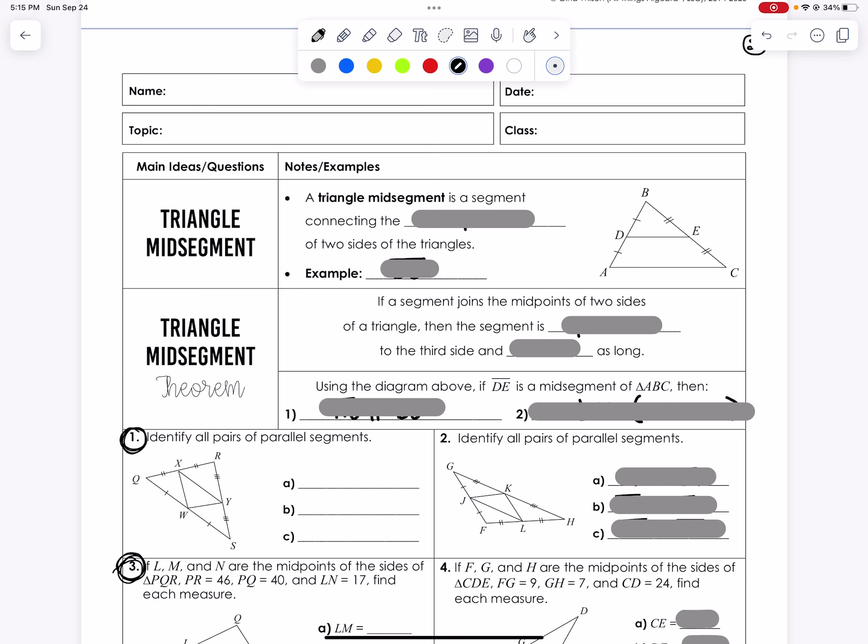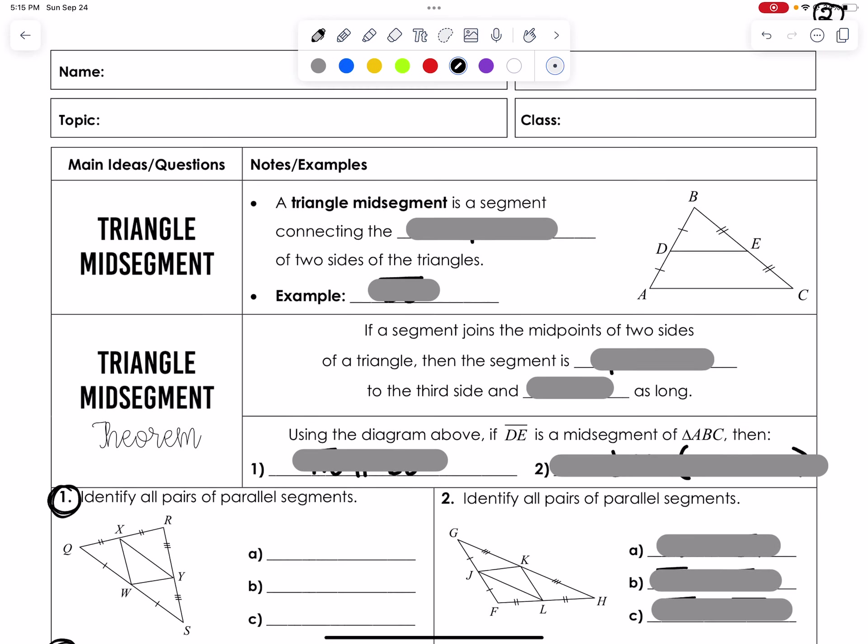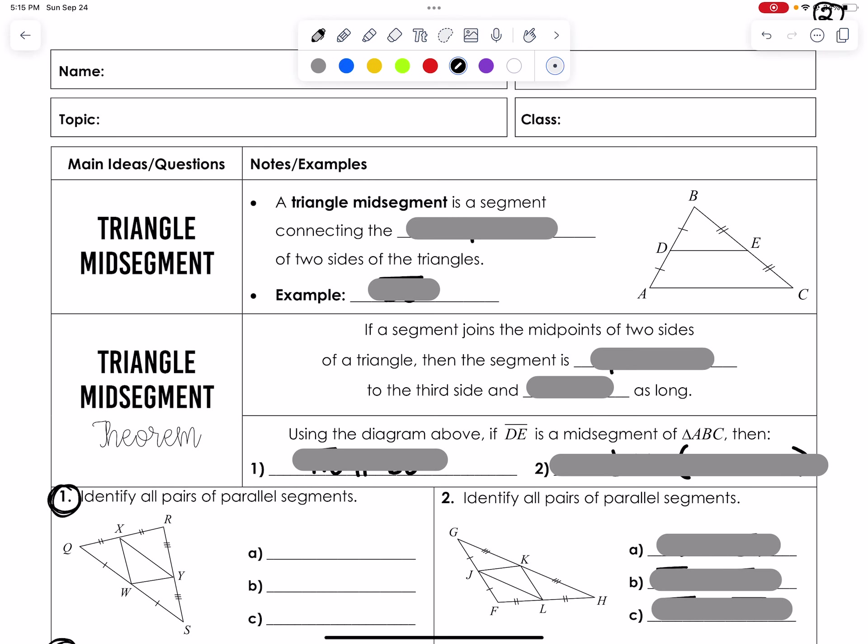So again, please have some colors available next to you. I can't tell you how important it is to have your brain find those relationships because sometimes these segment notations just aren't enough to catch our eyes. So getting started, let's review triangle midsegment.